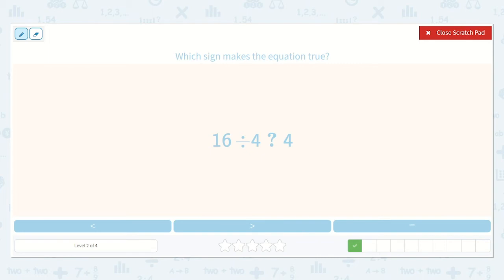Here we have 16 divided by 4, and then we have 4. So let's count by 4's until we get to 16. 4, 8, 12, 16. That was 4 4's.